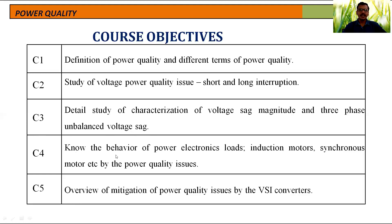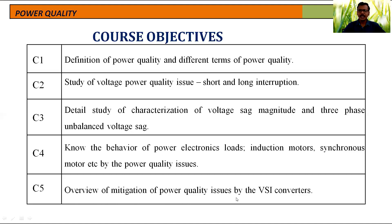The fourth objective is to know the behavior of power electronic loads, induction motors, synchronous motors, etc., affected by the power quality issue. When the power quality deviates, what is the behavior of electronic loads like power front devices, induction motors, as well as synchronous motors — that behavior we will discuss. The fifth objective is mitigation of power quality issues by voltage source inverter converters — how to reduce power quality problems with the help of inverters, preferably voltage source inverters. These are the five different course objectives of this subject.